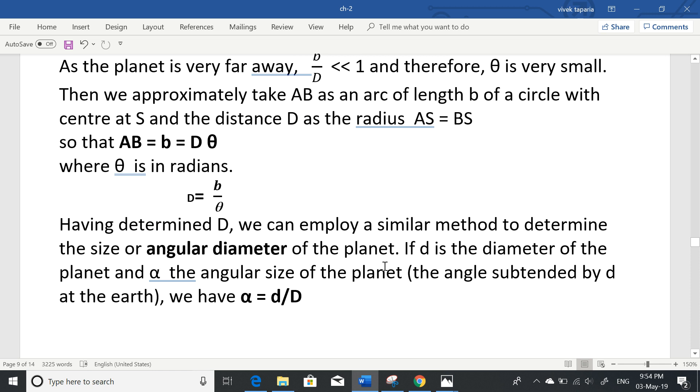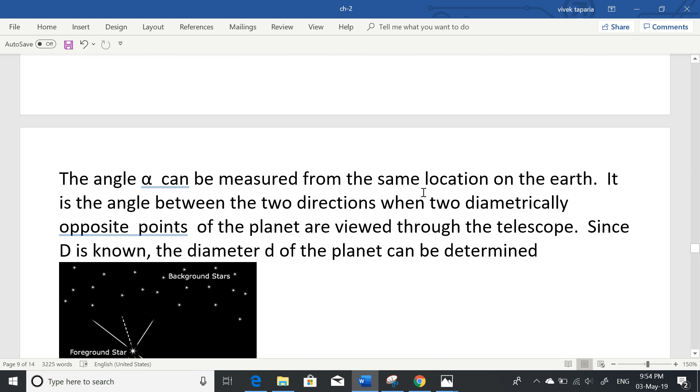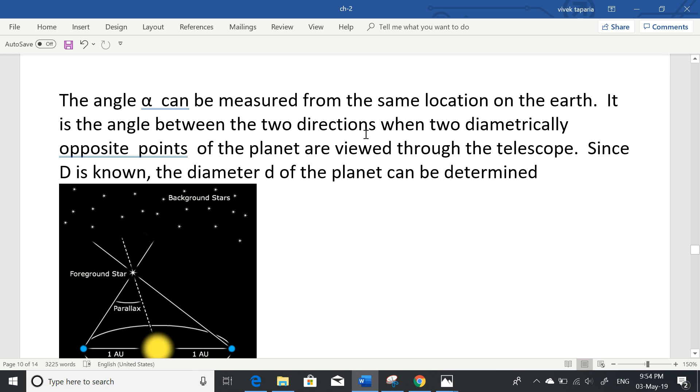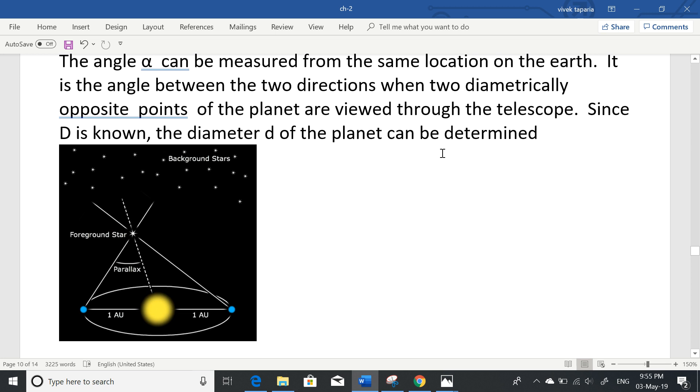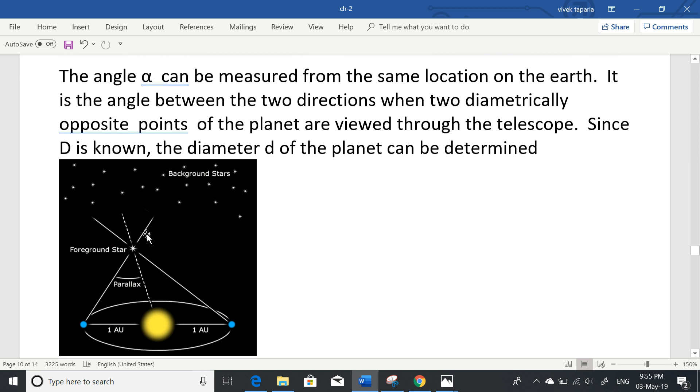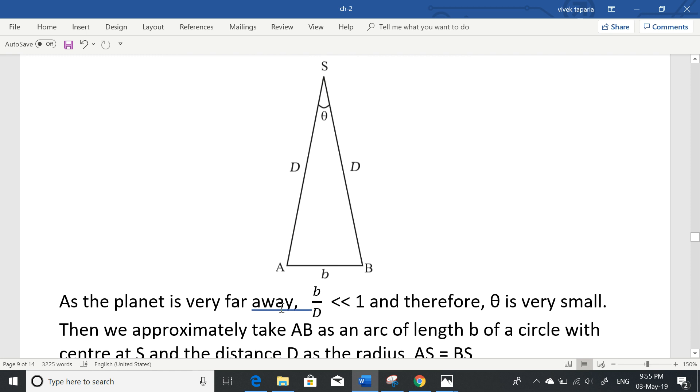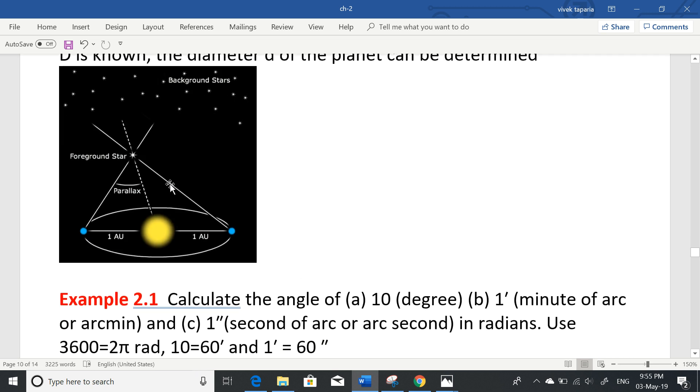Having determined capital D, we can employ a similar method to determine the size or angular diameter of the planet. If small d is the diameter of the planet and alpha is the angular size, then the angle subtended by d at the earth gives us alpha equals d by D. The same formula applies. The angle alpha can be measured from the same location on earth by viewing two diametrically opposite points of the planet through a telescope.